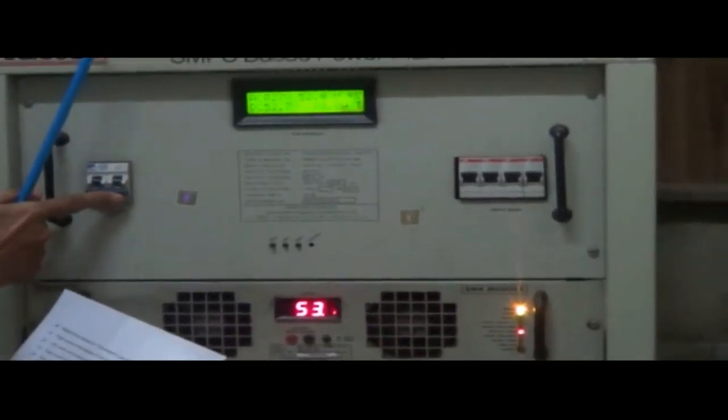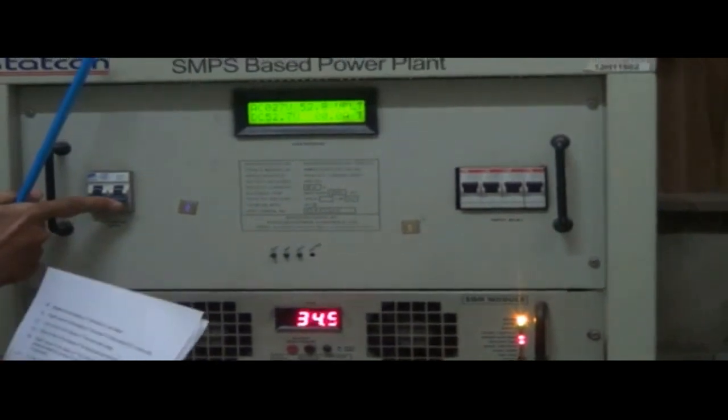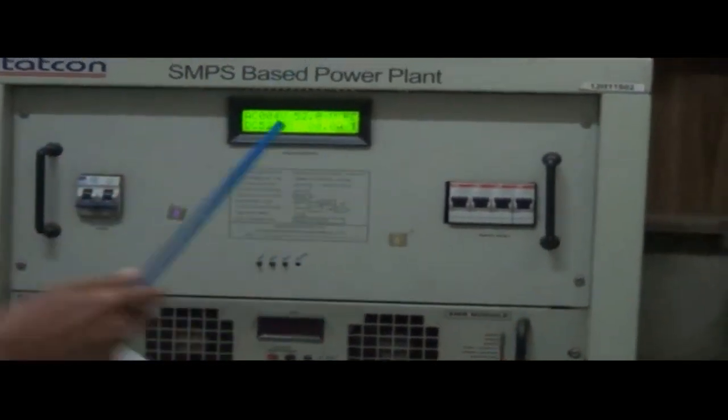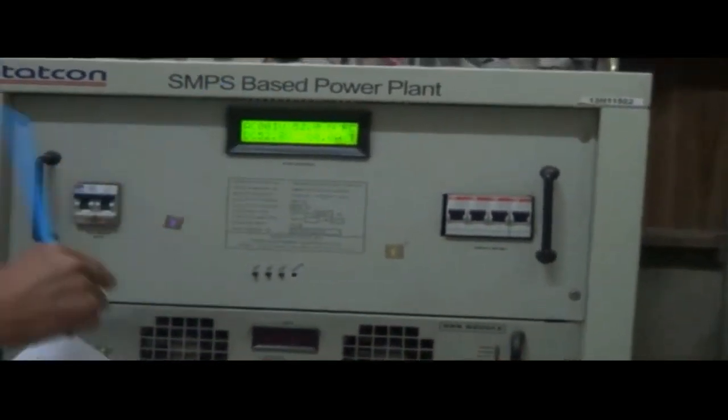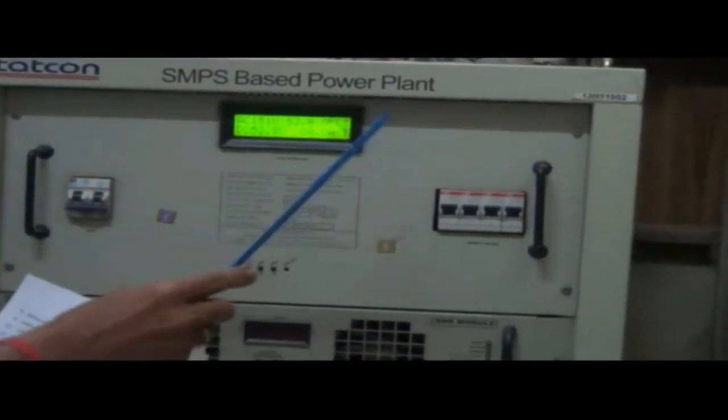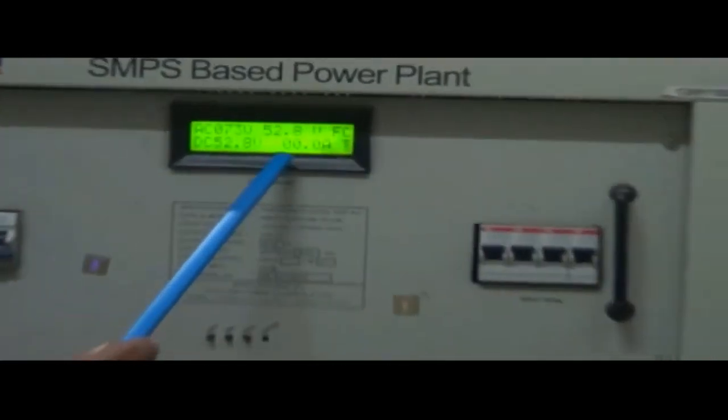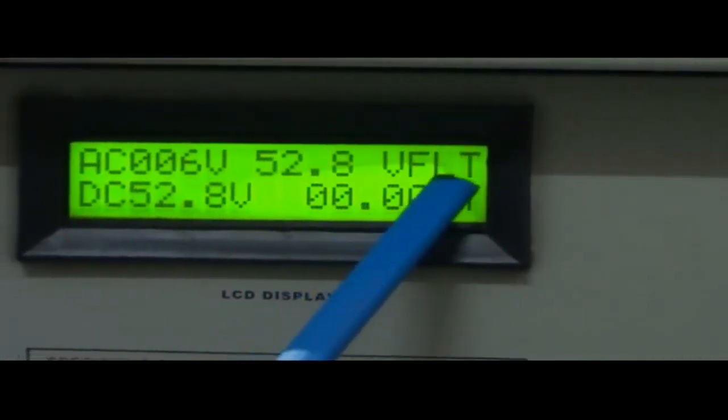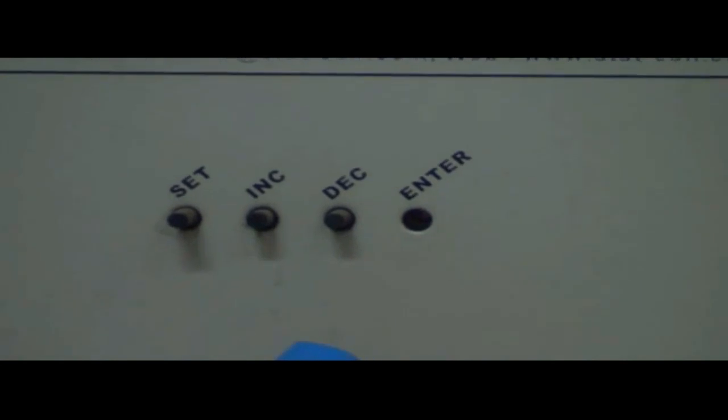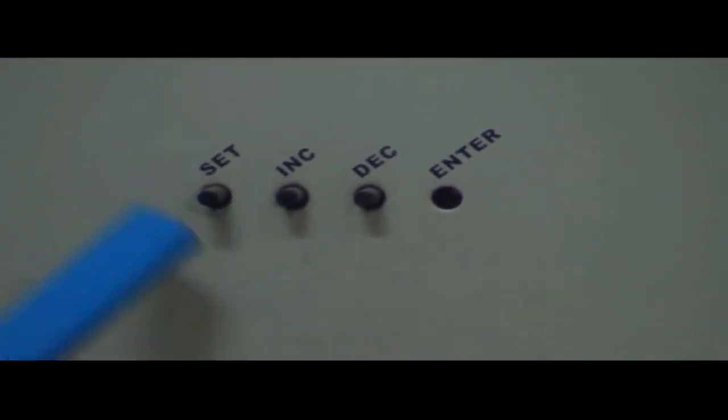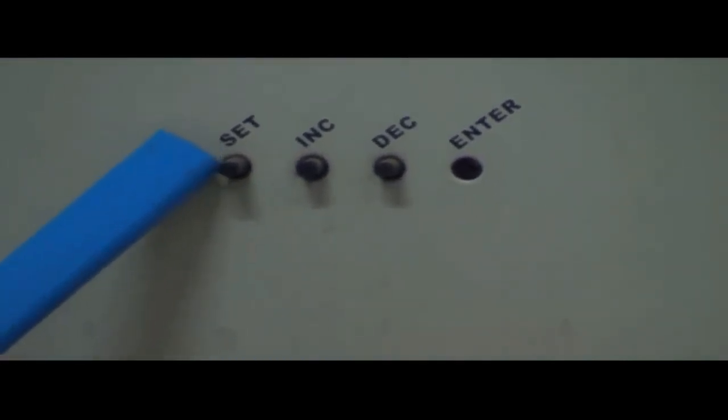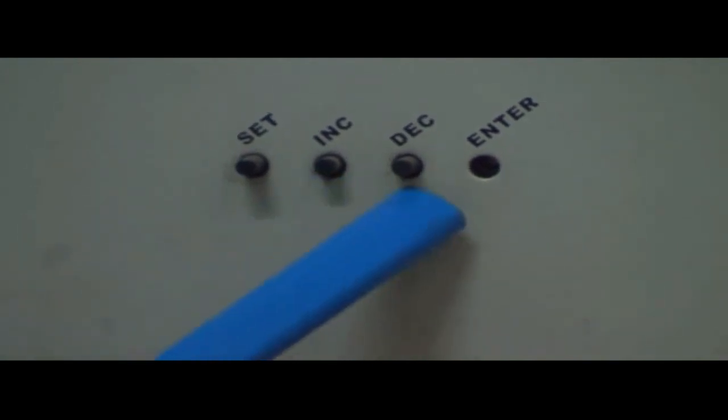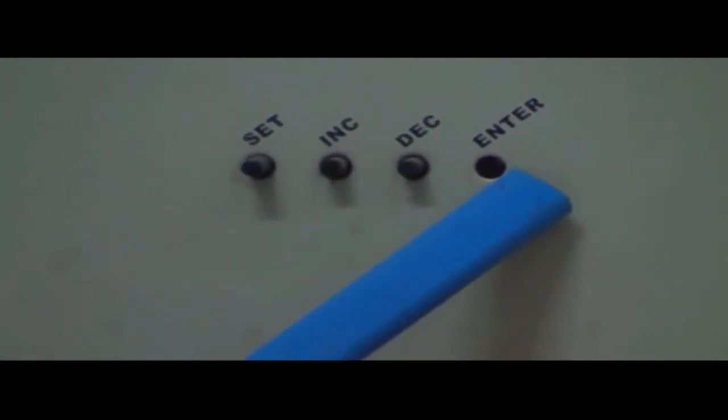The system will give alarm and display FLT with blinking effect till the fault goes. Press enter to see the faults. The list of faults will be displayed within 30 seconds and buzzer will stop ringing. There are four adjustment keys on front panel: set, increase, decrease, and enter.